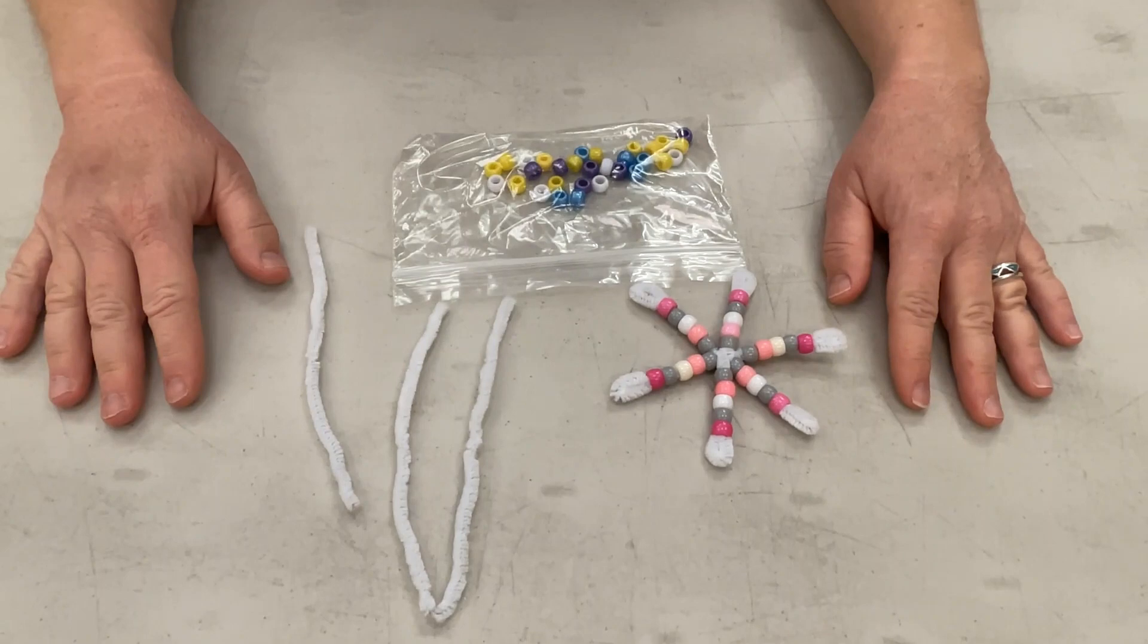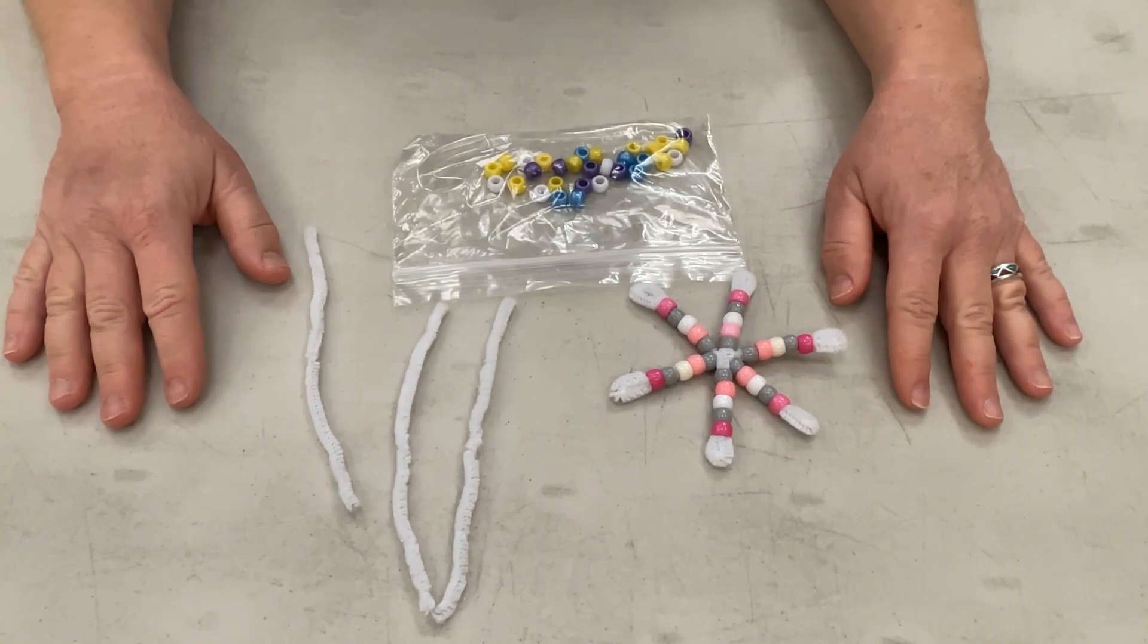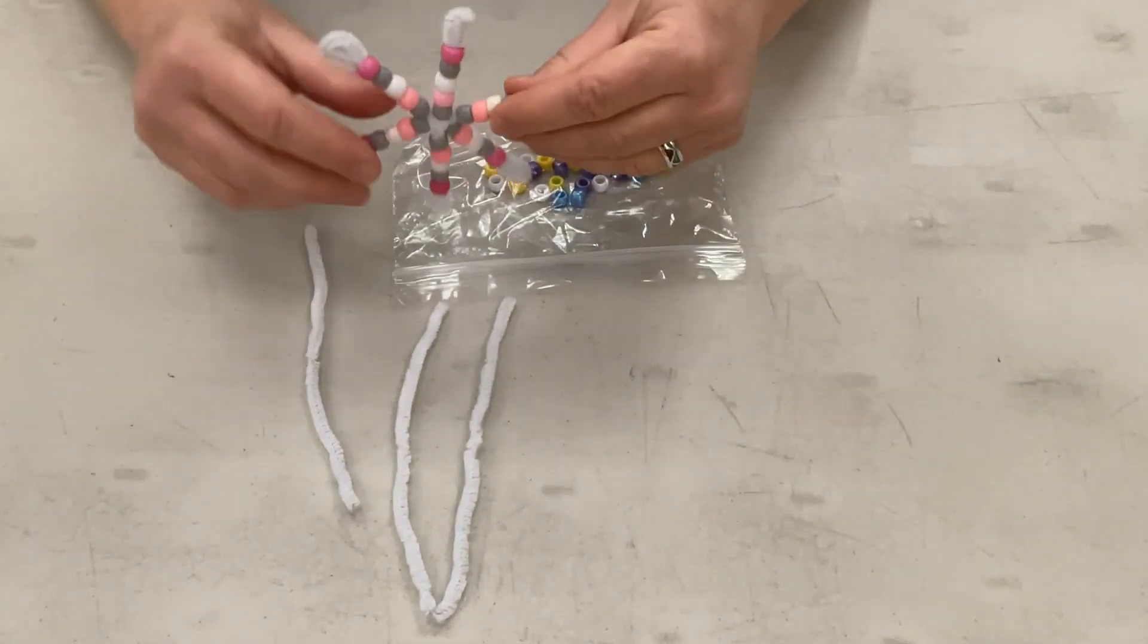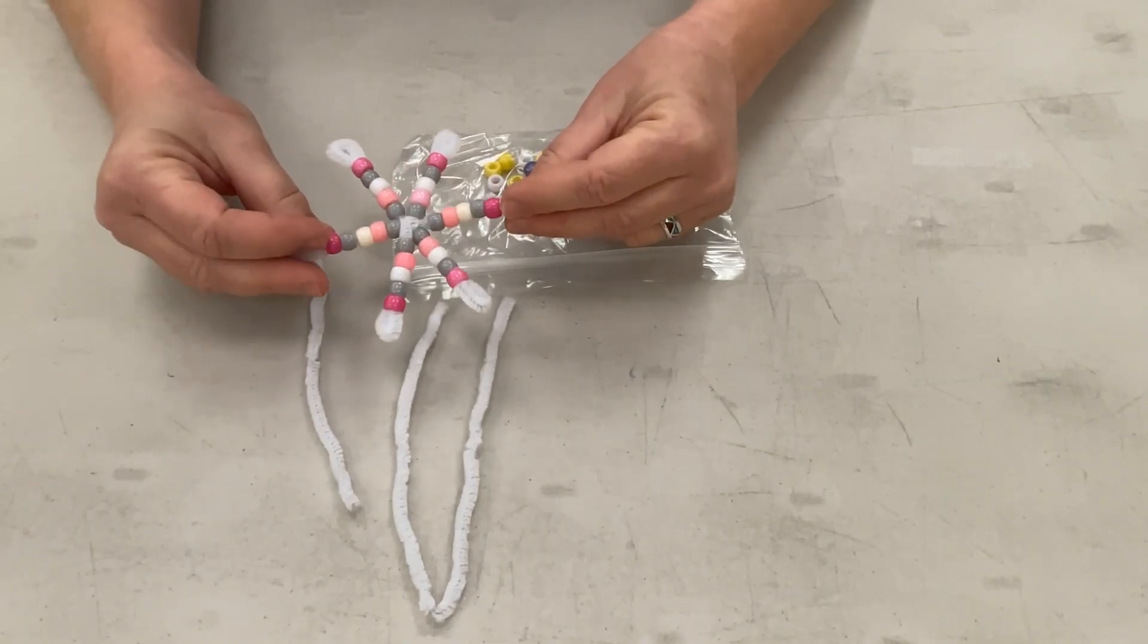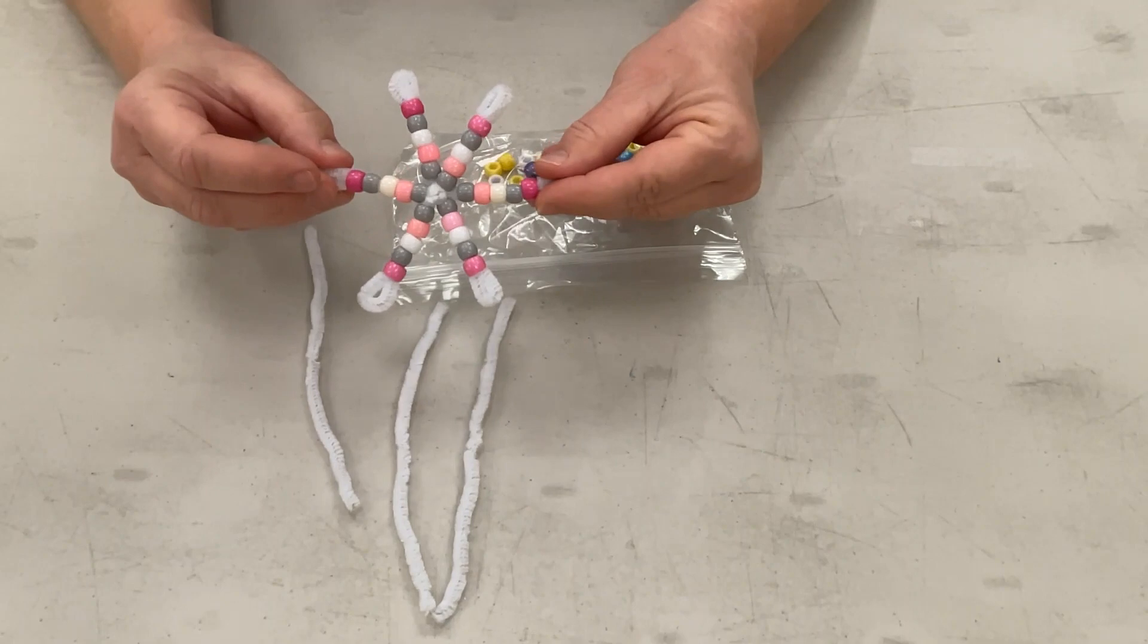Hi, my name is Christy Valentine and I'm the children's librarian at Fountain Hills Library, part of the Maricopa County Library District. Today I'm going to show you how to make a beaded snowflake. We're going to use pipe cleaners and pony beads to make a beautiful snowflake.